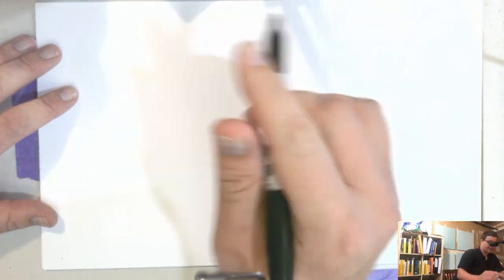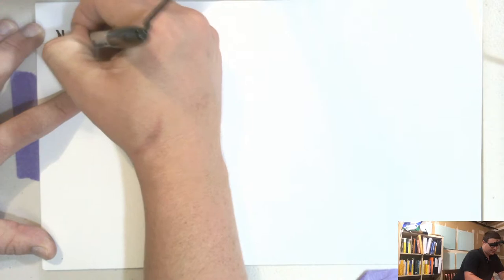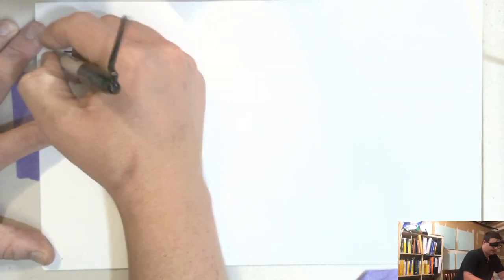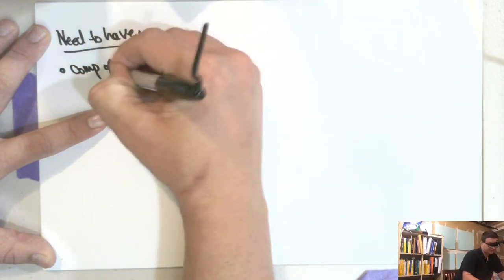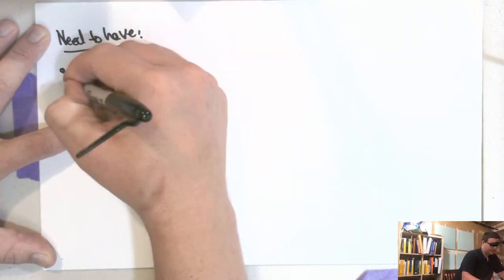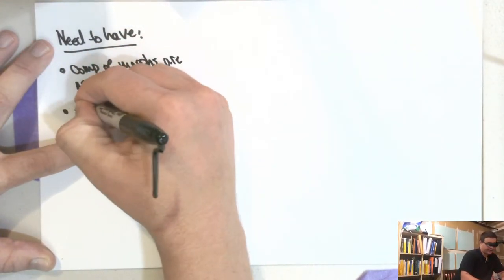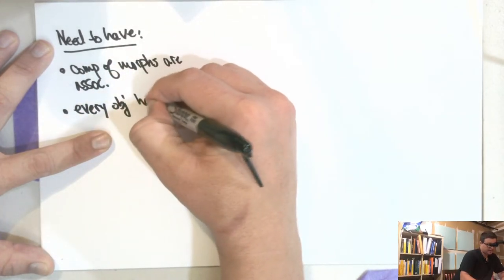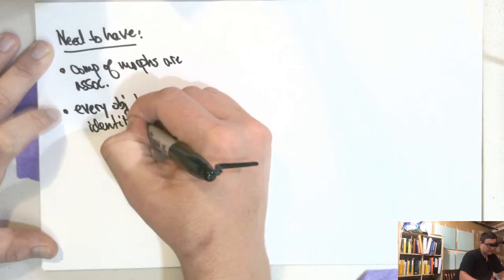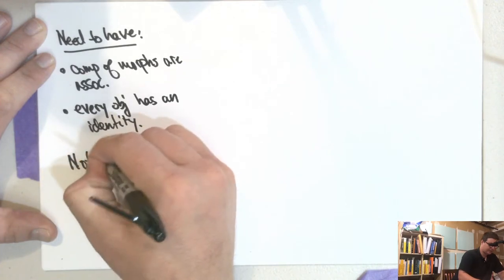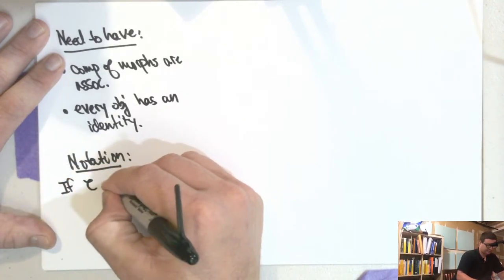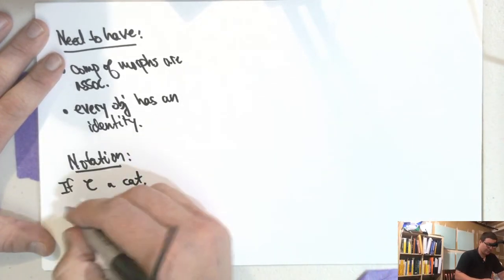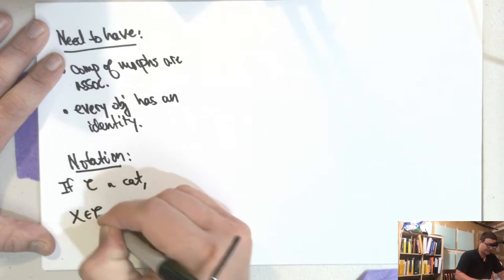There are functors. Let me give the things you need to have. The axioms are: composition of morphisms is associative, and every object has an identity element. I'll also use some notation: if C is a category, we write X ∈ C to say X is an object of C.